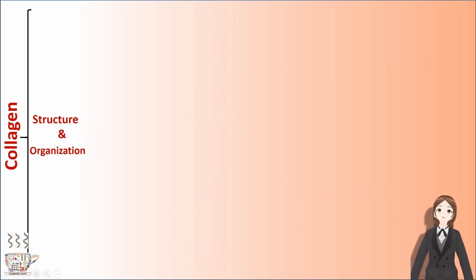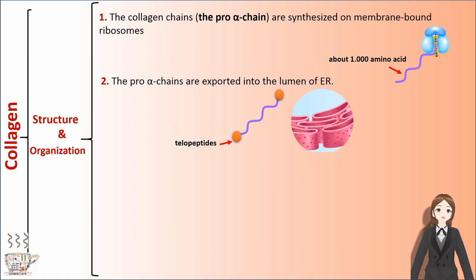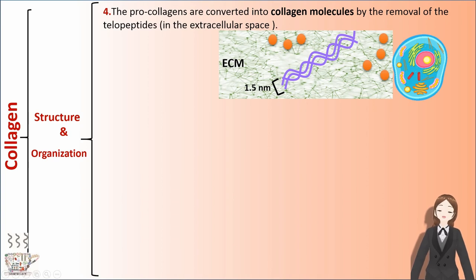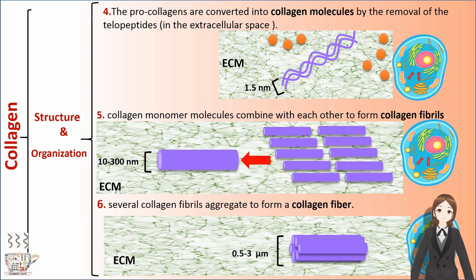Regarding the structure and organization of collagen: first, the collagen chains, or pro-alpha chains, are synthesized on membrane-bound ribosomes. Then the pro-alpha chains are exported into the lumen of the ER. Three pro-alpha chains combine together to form a pro-collagen. The pro-collagens are converted into collagen molecules by the removal of the telopeptides in the extracellular space. Collagen monomer molecules combine to form collagen fibrils, and finally several collagen fibrils aggregate to form a collagen fiber.